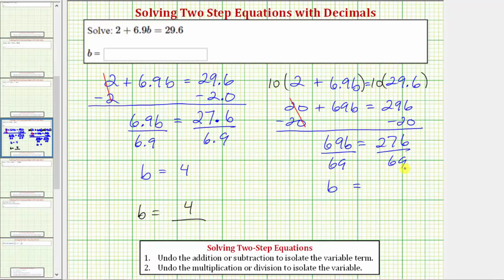On the right side we have 276 divided by 69. Which is actually the same quotient we used to determine this quotient here. After we move the decimal point one place to the right in the divisor and the dividend. So 276 divided by 69 is 4. Giving us the same solution. The solution is b equals 4.